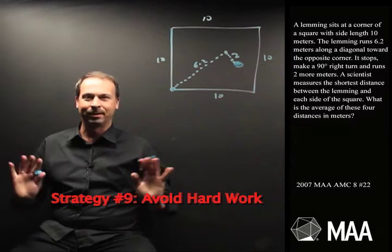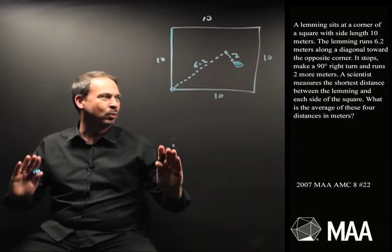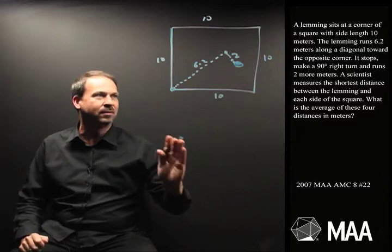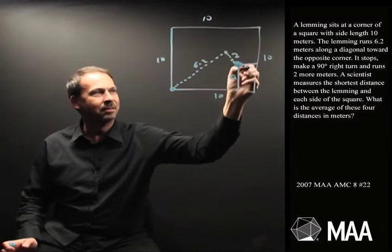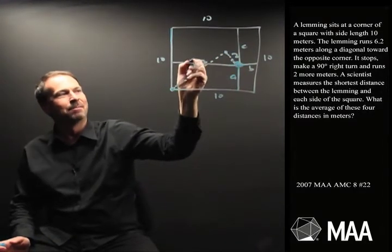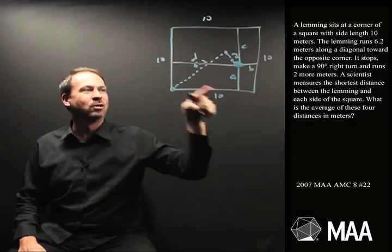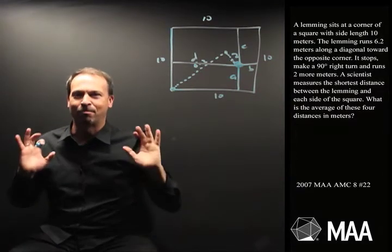So what's really going on? What's the scientist going to do? The scientist is going to measure the shortest distance between the lemming and each of the sides of the square. So I'm going to measure this distance, get some number A. Measure this distance, get some number B. Measure this distance, get some number C. And finally over to the other side, get some number D. And it's going to take the average of those four numbers A, B, C and D. It's going to add those four numbers and divide by four.